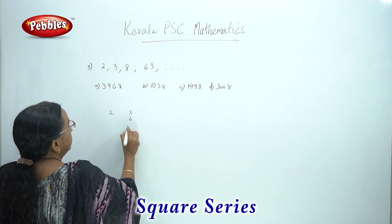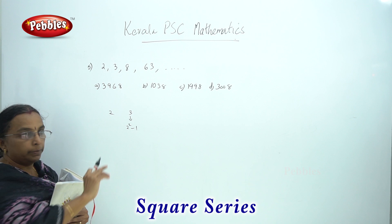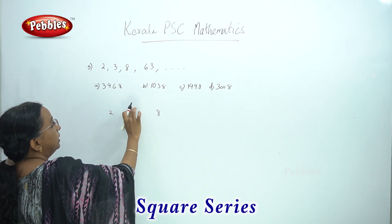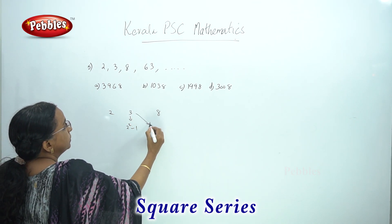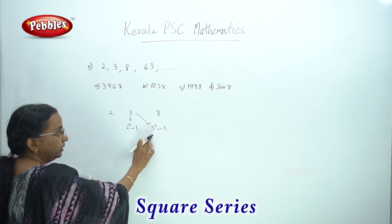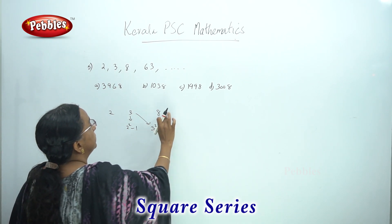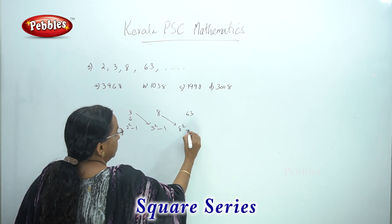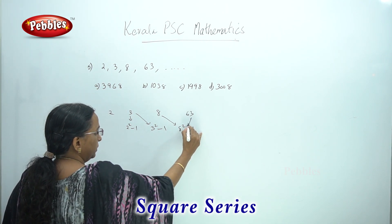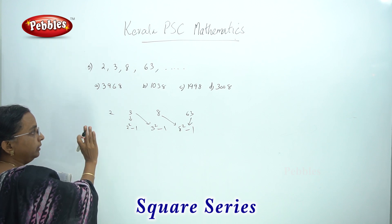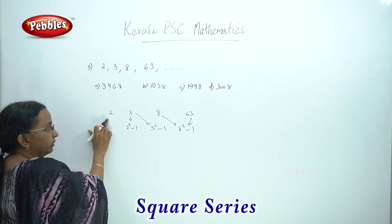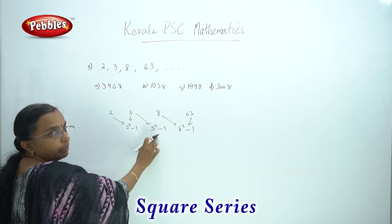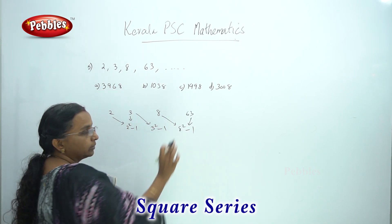The number is 3. We have 2 squared minus 1. The number is square minus 1. We have 3 squared minus 1. 3 squared is 9, and 9 minus 1 is 8. We have 2 squared minus 1. The number equals 2. 3 squared minus 1 is 8.